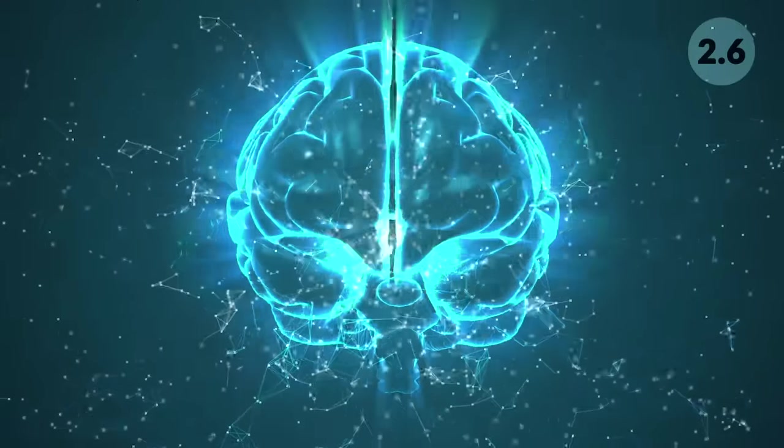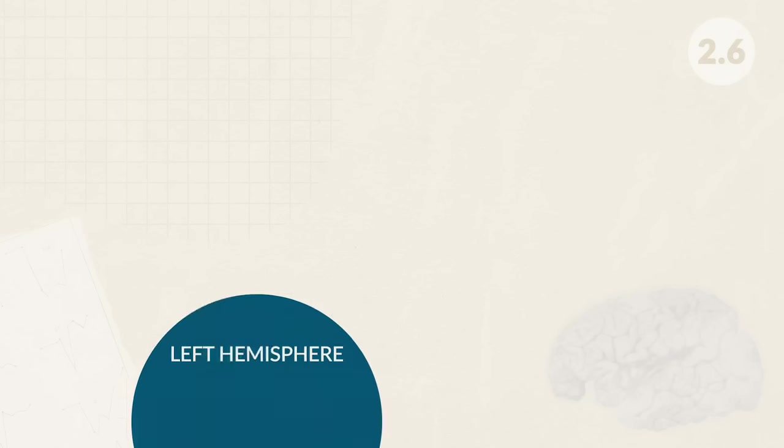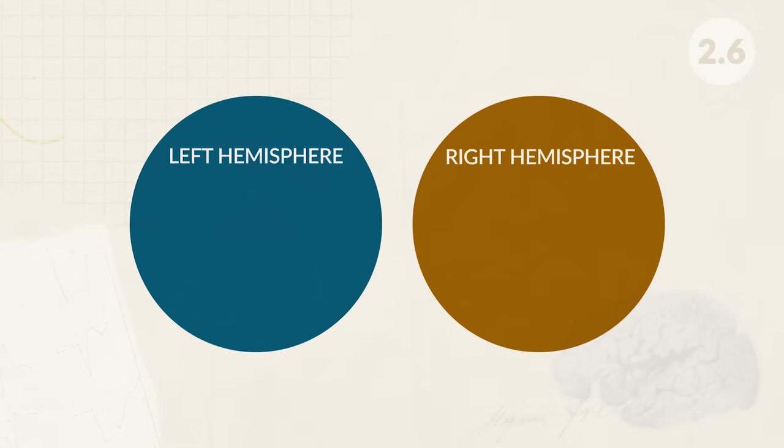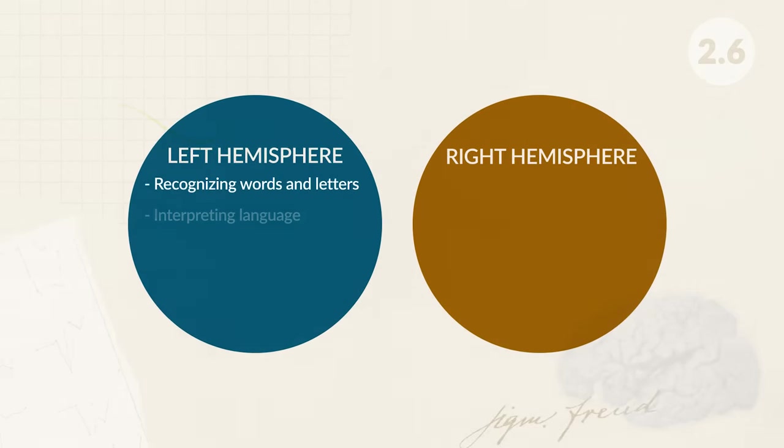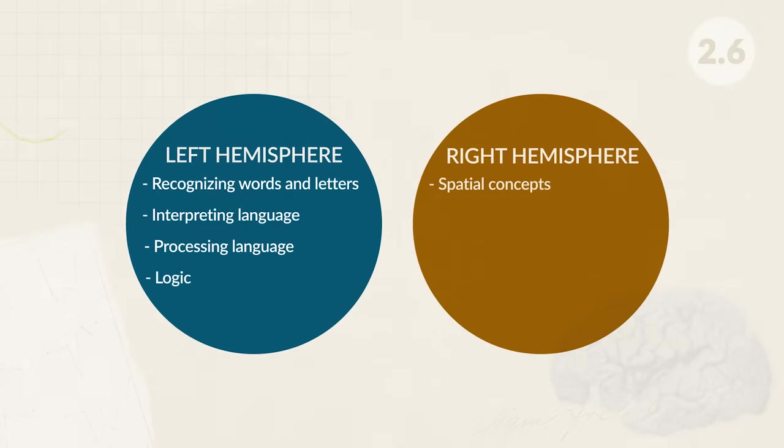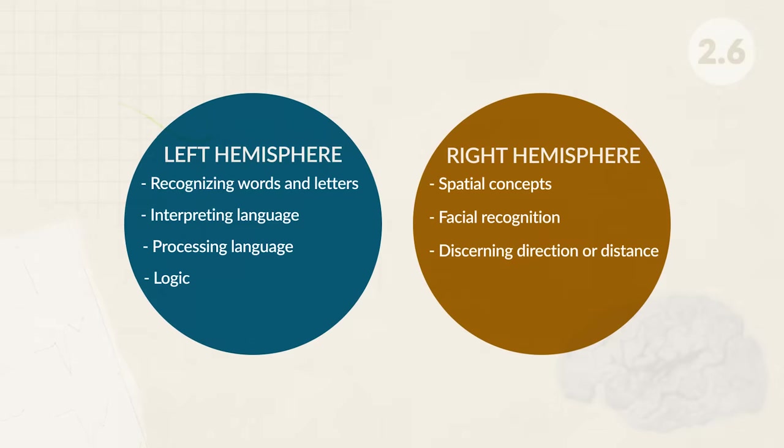When looking at the brain, there are three major regions. The hindbrain is located at the bottom of the brain. The midbrain is up from the base of the brain and is surrounded by the forebrain. The forebrain is on the top of the brain and is what most people visualize when they think about the brain. Today we know that the brain uses brain lateralization — the differing functions of the left and right hemisphere, essentially the division of labor between the two. Each hemisphere has different areas it's more efficient in, but at the end of the day we all use both hemispheres. The left brain is better at recognizing words and interpreting language, while the right hemisphere is better at spatial concepts such as facial recognition and discerning direction.